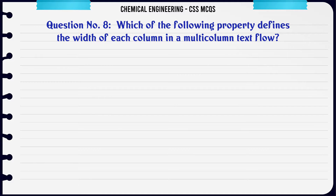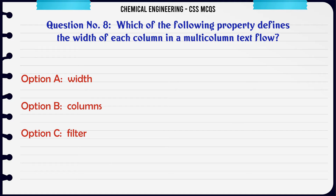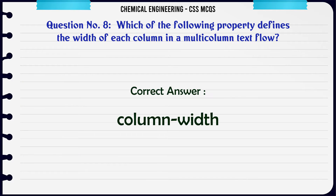Which of the following property defines the width of each column in a multi-column text flow? A. Width. B. Columns. C. Filter. D. Column width. The correct answer is: Column width.